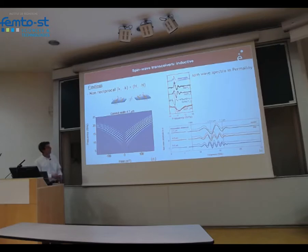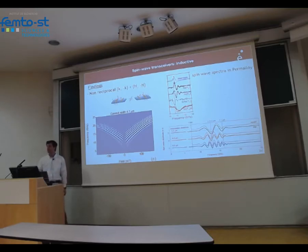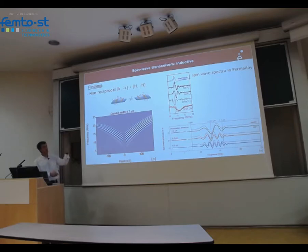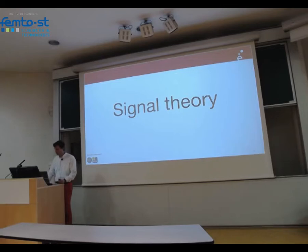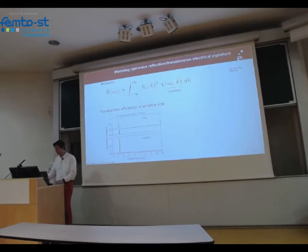Looking at the same signal from port 2 to port 1 versus port 1 to port 2 shows a factor of 2.5 in amplitude — a signature of the non-reciprocity discussed earlier. Equivalently, reversing the magnetic field orientation from positive to negative also shows much less transmission due to this non-reciprocity.